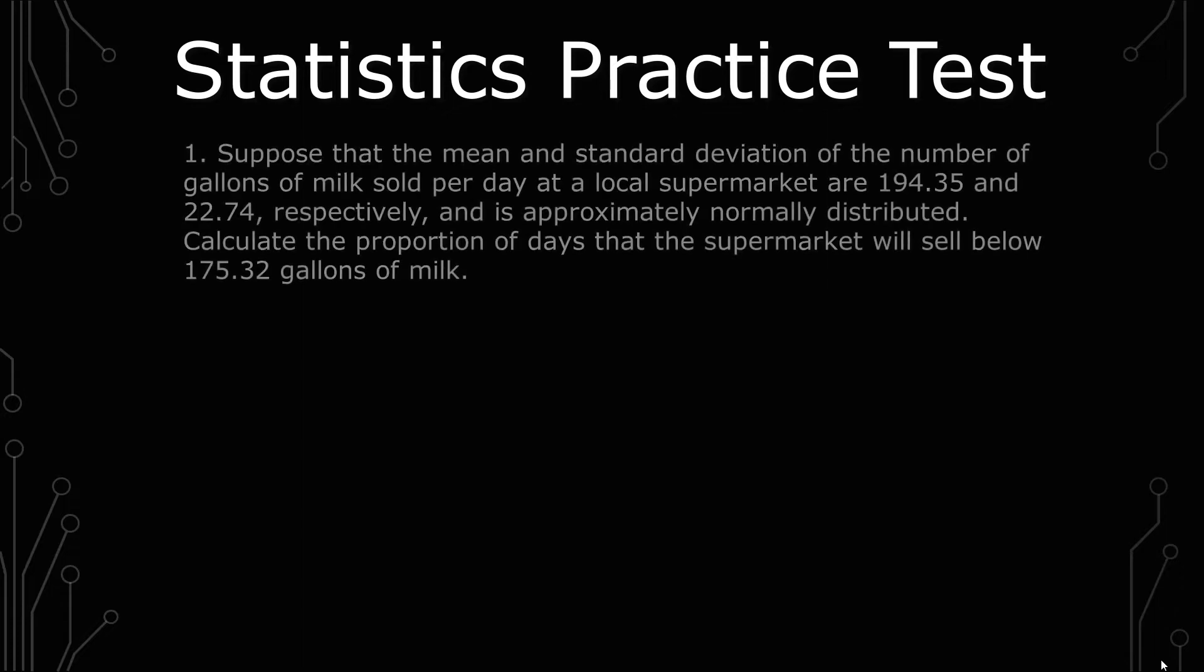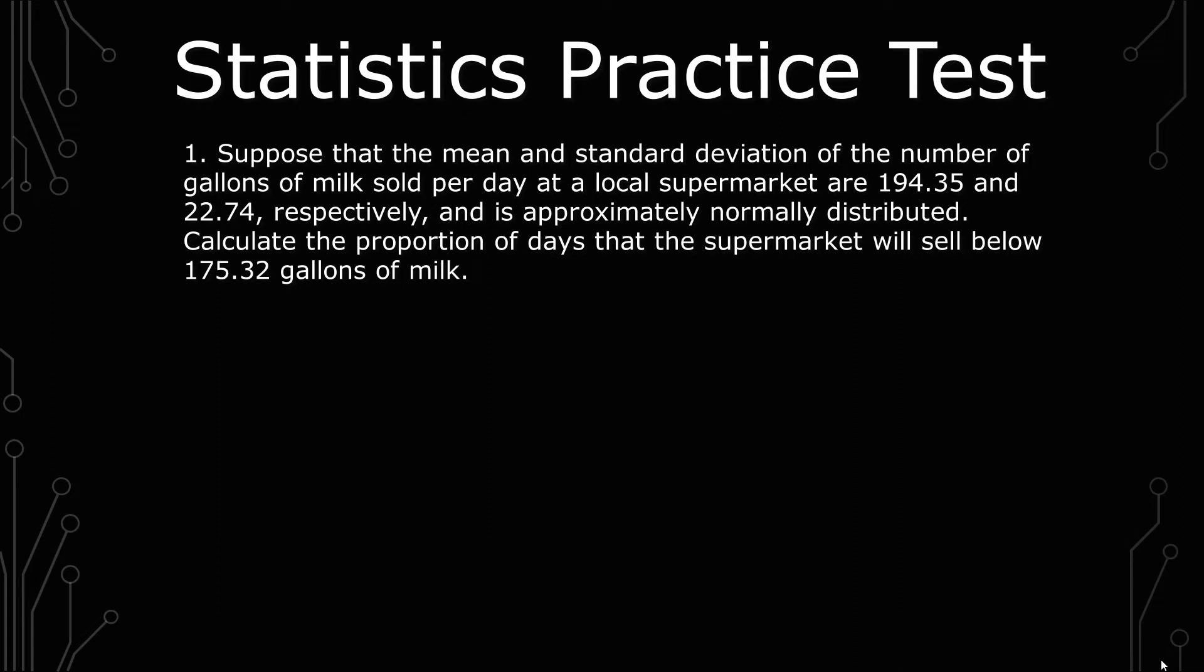The first question is suppose that the mean and standard deviation of the number of gallons of milk sold per day at a local supermarket are 194.35 and 22.74 respectively and is approximately normally distributed. Calculate the proportion of days that the supermarket will sell below 175.32 gallons of milk.